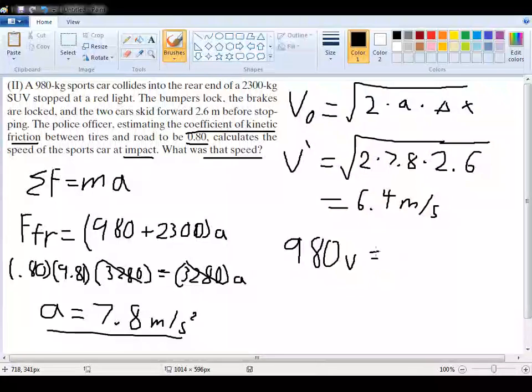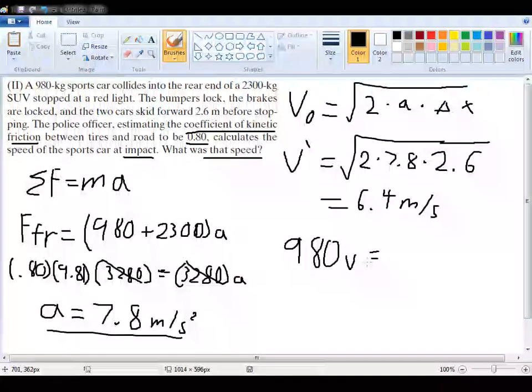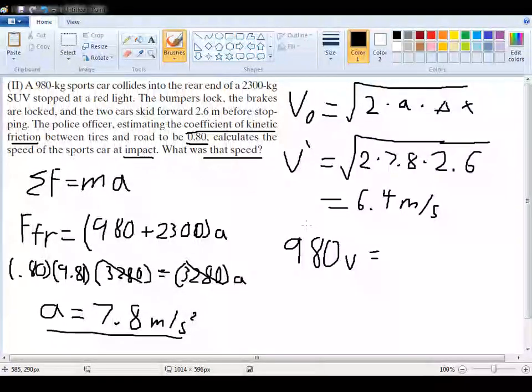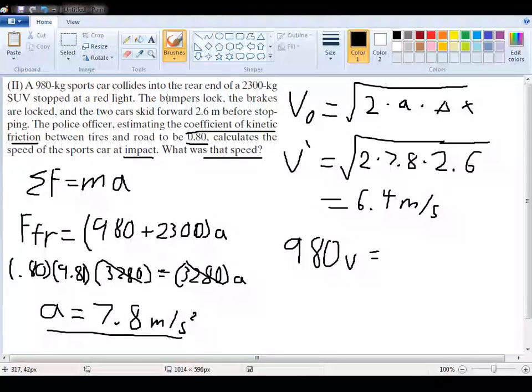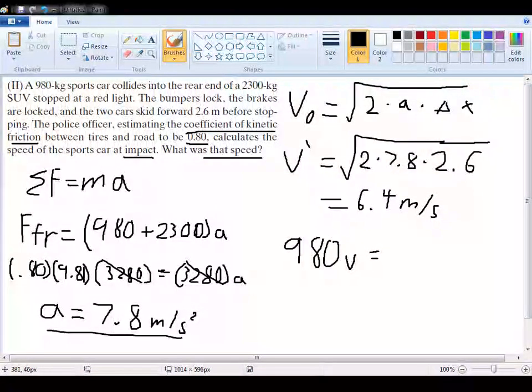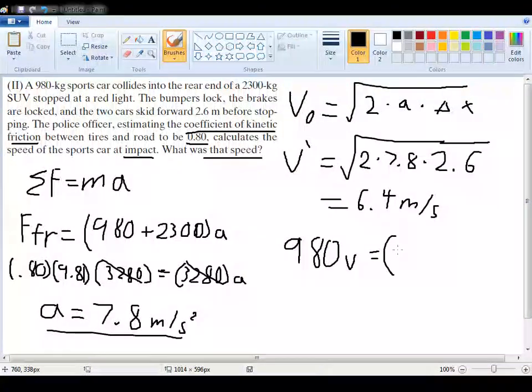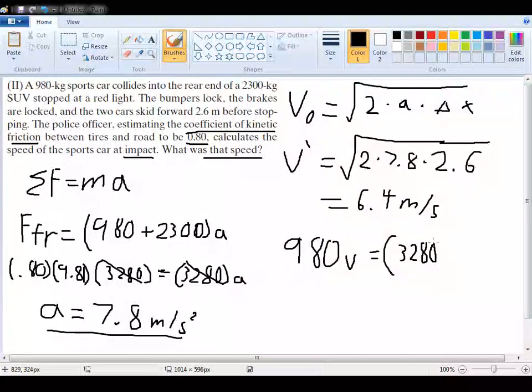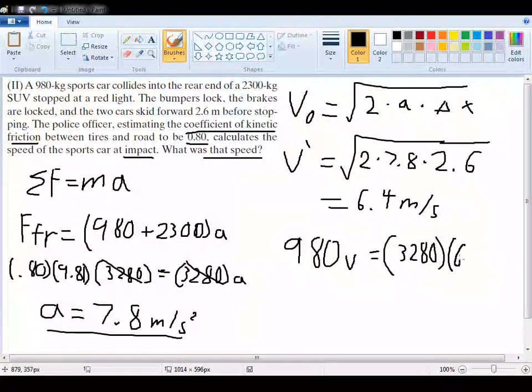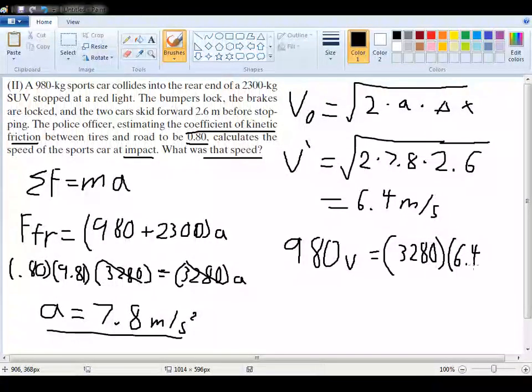Since the other car is at rest, that's going to be equal to zero, and we thus don't need to worry about it. So the final mass and velocity we have then is the total mass of the cars put together, which is going to be 3280, times our final velocity of 6.4.